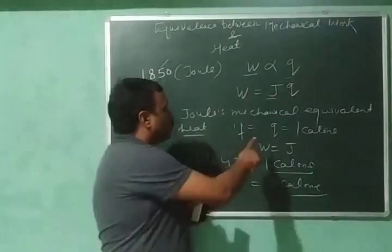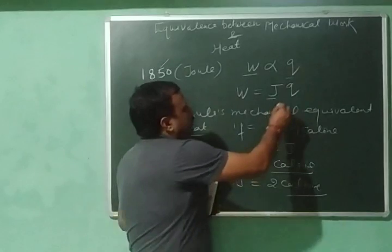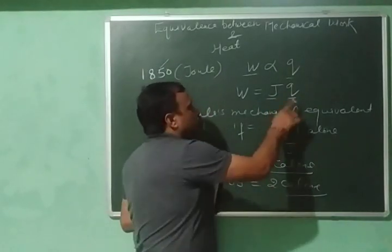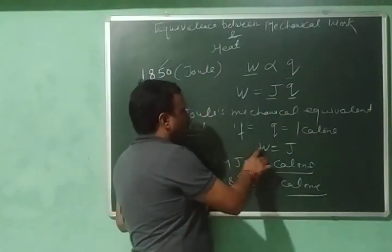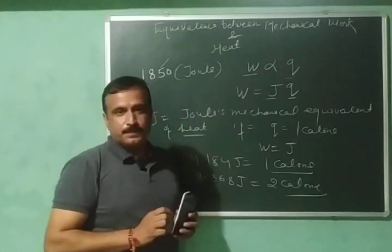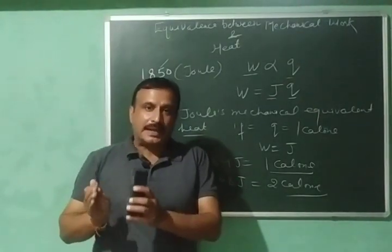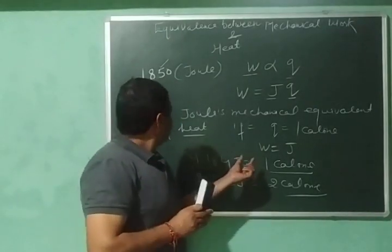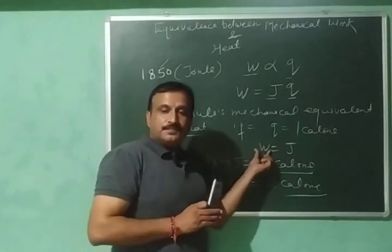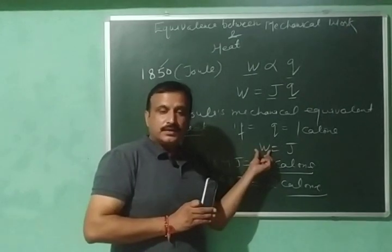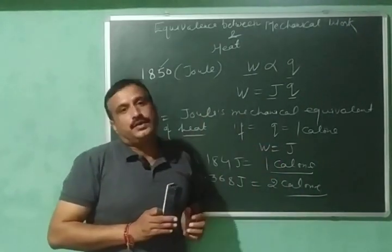If Q is equal to 1 calorie, that is I will substitute Q equal to 1 calorie, then W will be equal to J. So now I can define Joule's mechanical equivalent of heat that it is the amount of work done required to produce 1 calorie of heat.